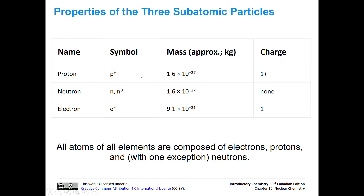Protons and neutrons have similar mass. Protons are in the nucleus with a plus-one charge. Neutrons are in the nucleus and they don't have a charge. The electrons are in a cloud around the nucleus and they have a minus-one charge. All atoms of all elements are composed of electrons, protons, and — with only one exception being hydrogen — neutrons.